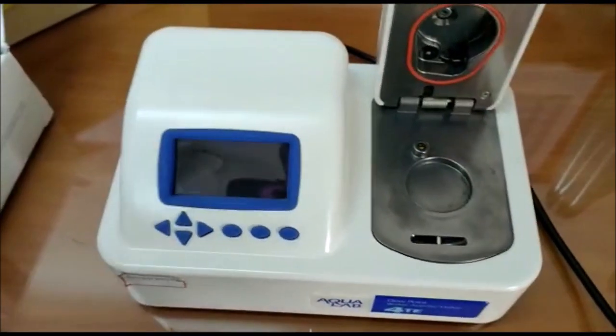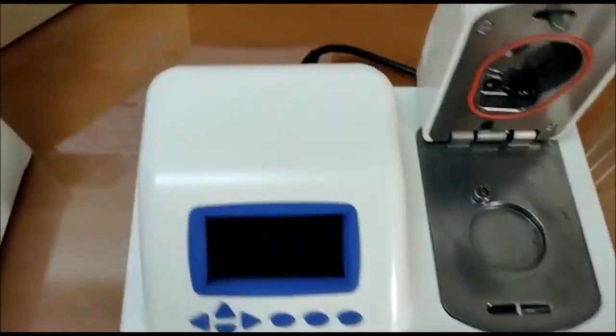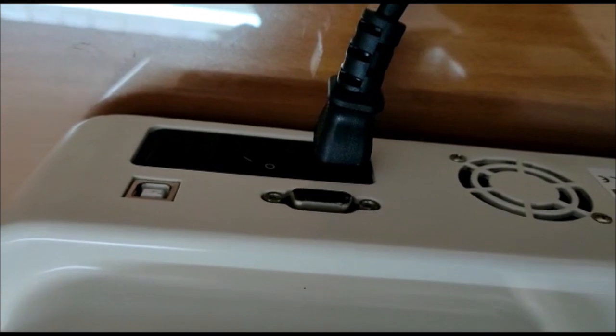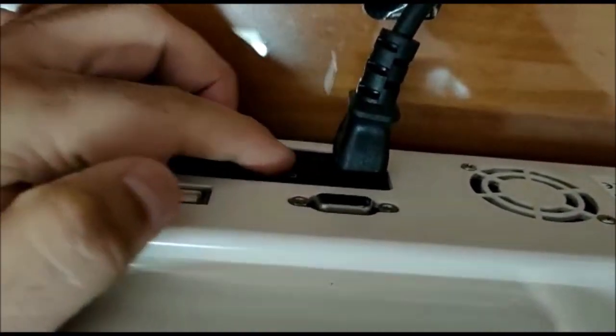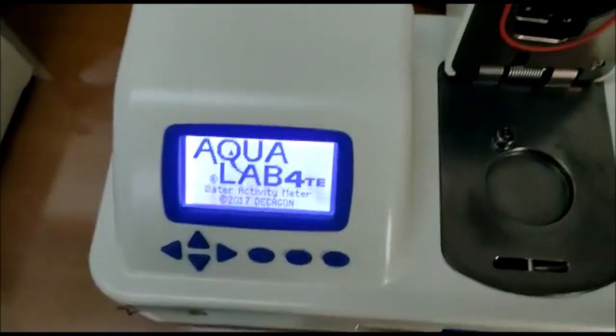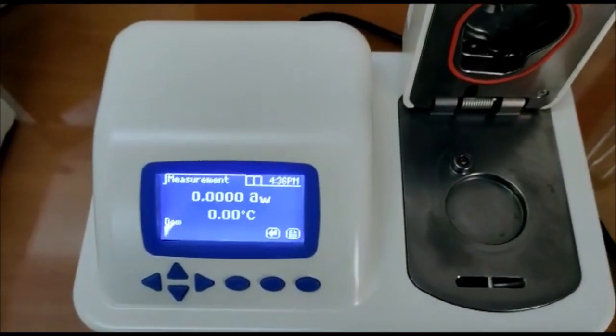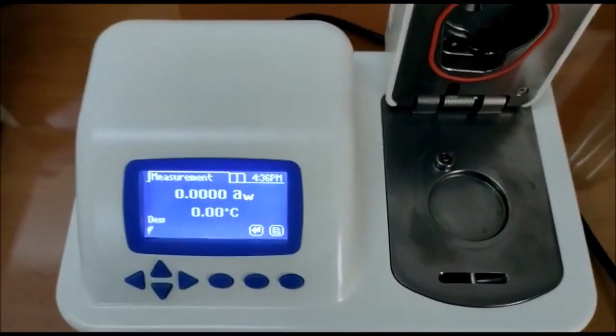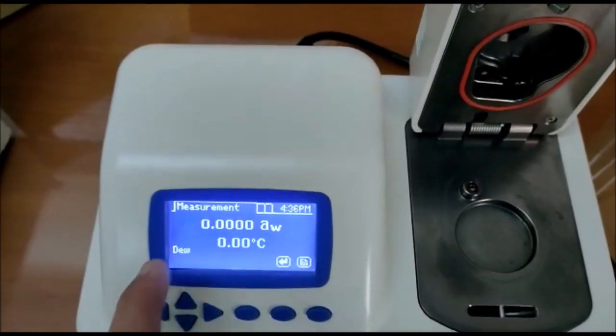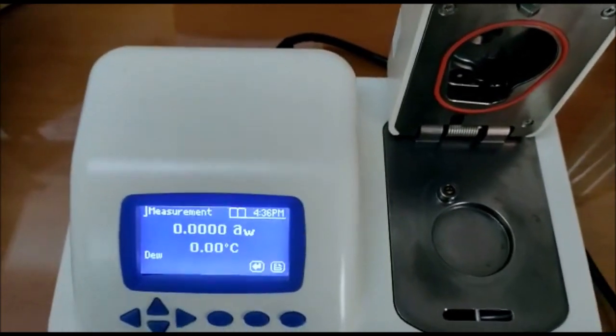Moving on to the instrument. This is a plug and play instrument. You only have to attach the power cable to it right here and you have to switch it on like this. The first screen which will appear here is measurement screen which shows the water activity up to 4 decimal places and temperature.